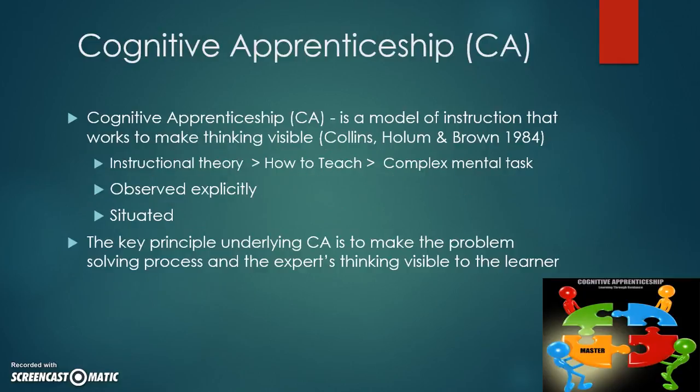Cognitive apprenticeship is a model of instruction that works to make thinking visible to people. It is a theory that teaches learners to bring tacit processes into the open, where they can observe and practice with the help of a teacher and other students. The key principle is to make the problem-solving process and expert thinking visible to the learner — the learner needs to know what happens mentally in the expert's head while solving a problem or accomplishing a task.